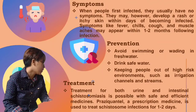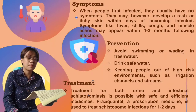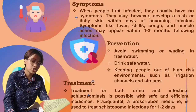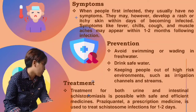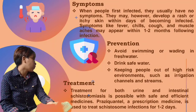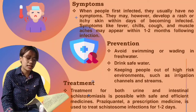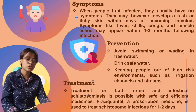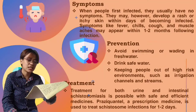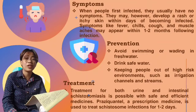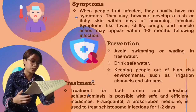For the prevention, if you are in a country where schistosomiasis is prevalent, avoid swimming or wading in fresh water. Drink safe water, keep people out of high-risk environments such as irrigation channels and streams. Also, parasites may be prevented from reaching the skin by vigorous towel drying after an unexpected exposure to potentially contaminated water.